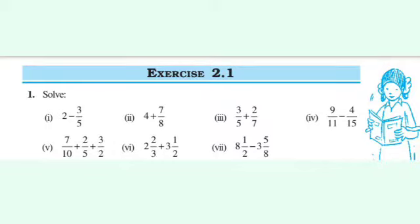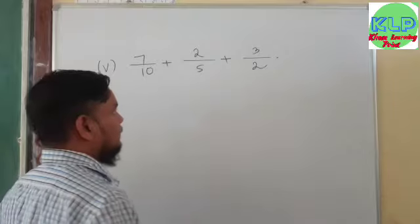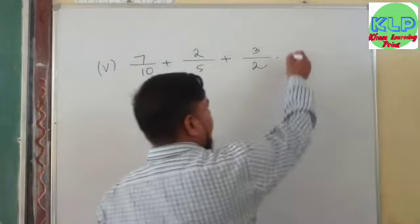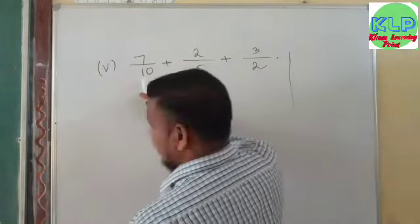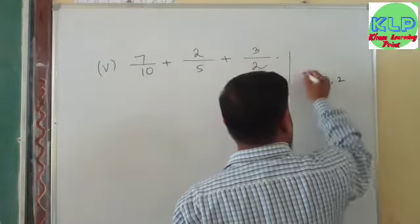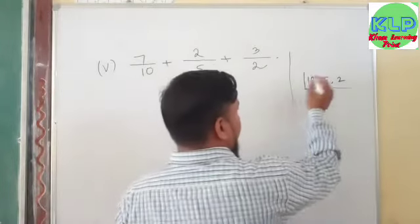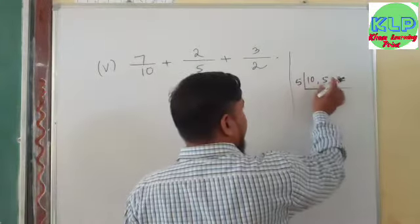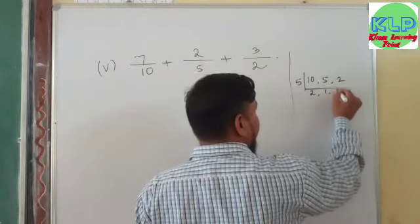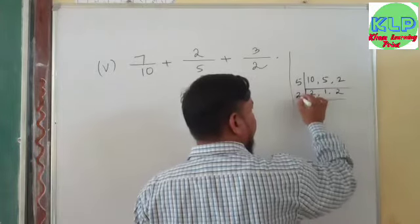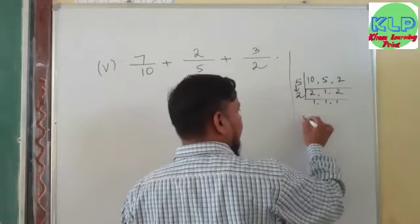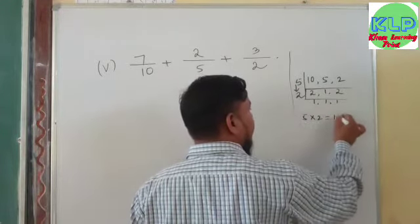Next one is 7 by 10 plus 2 by 5 plus 3 by 2. We need to find the LCM of 10, 5, and 2. Dividing by 5: we get 2, 1, and we have 2 remaining. So the LCM is 5 into 2, that is 10. The LCM is 10.